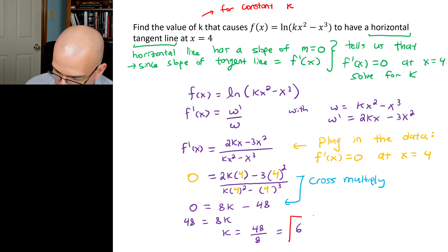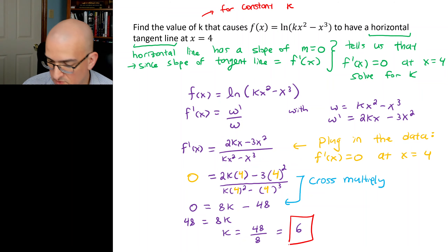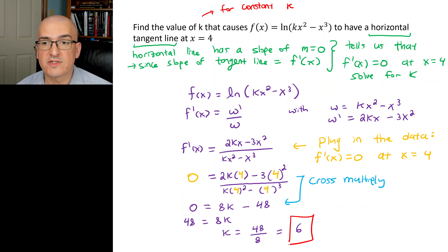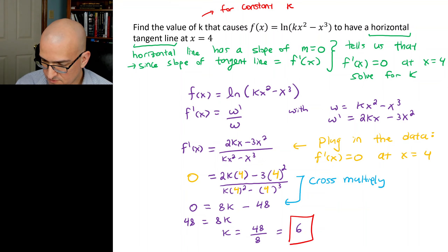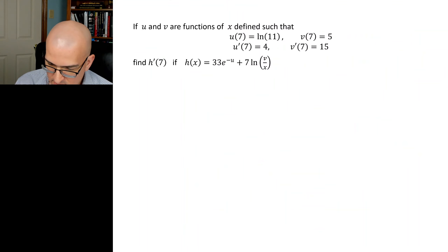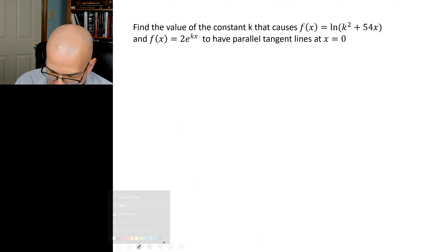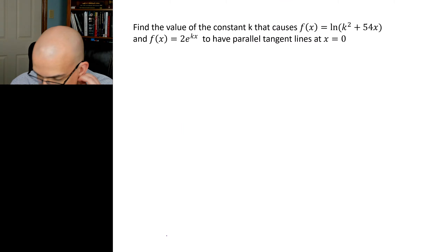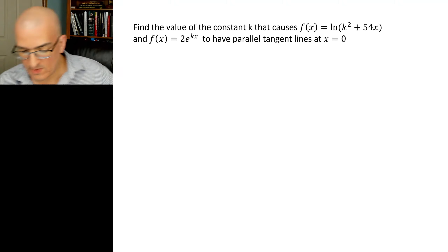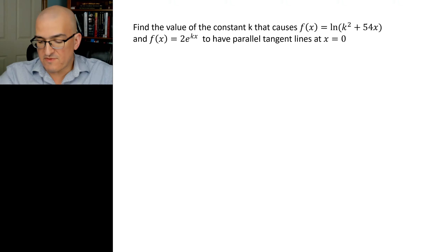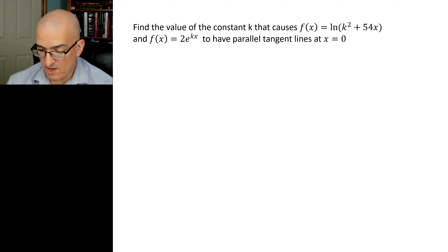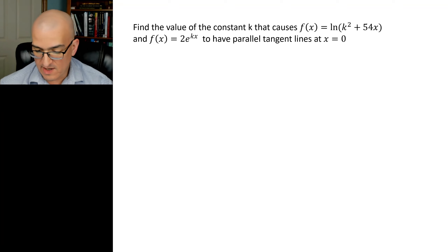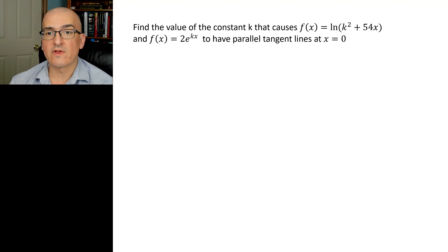k = 6 is our answer. Only that value of k will cause this function to have a horizontal tangent line at x = 4. The next example asks us to find the value of constant k that causes two log functions involving k to have parallel tangent lines when x = 0.